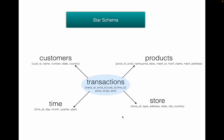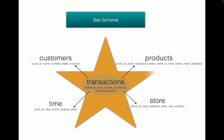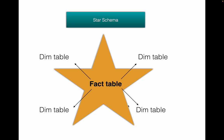You would also have a store dimension table holding store information like store ID, type of store, and address. This is basically a star schema — a center fact table supported by dimension tables. It is a really simple design with fewer joins, since you are just joining the center table with at most four tables.